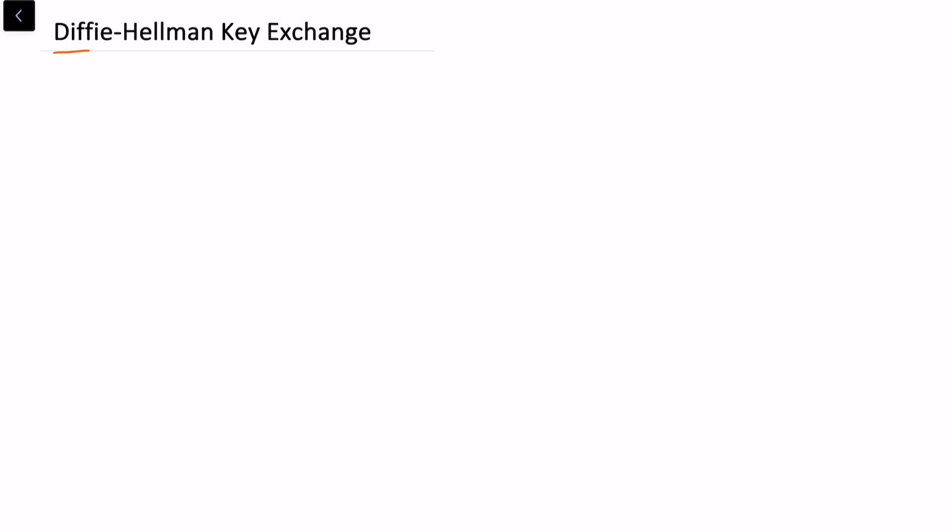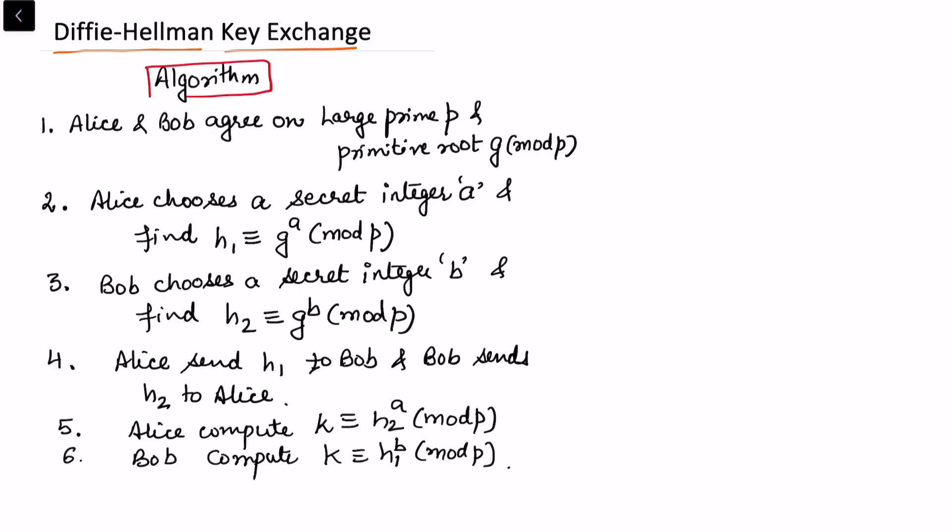In this video, I'll be explaining Diffie-Hellman key exchange. This algorithm is about finding a common key. Alice and Bob agree on a large prime p and a primitive root g mod p.